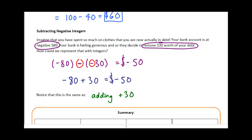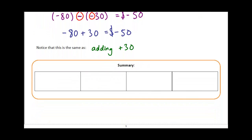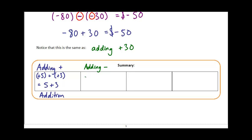Let's do a little summary of our adding and subtracting rules. If we are adding a positive, this is like the normal addition you've been used to all along. For example, positive 5 plus positive 3 is just 5 plus 3 — regular addition. But if we add a negative, take positive 6 plus negative 4: that simplifies to 6 minus 4. So adding a negative is like subtraction — it makes the number become less.